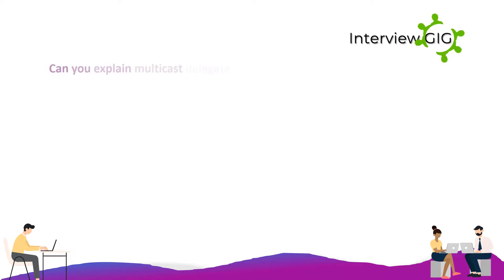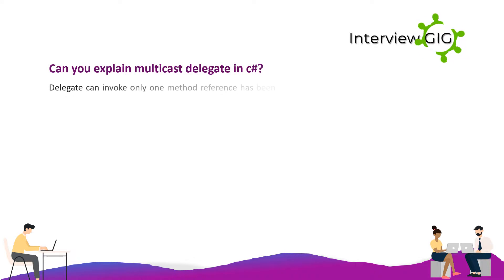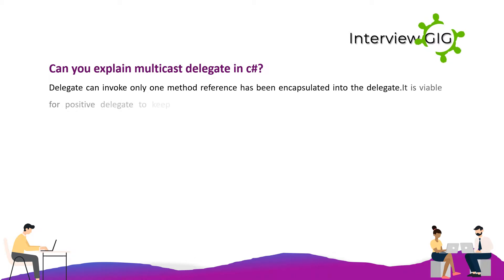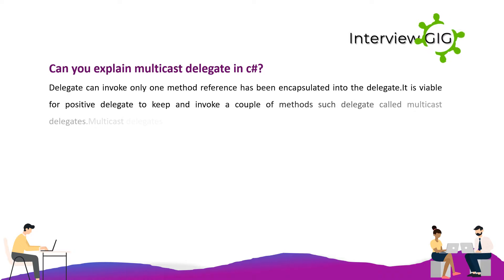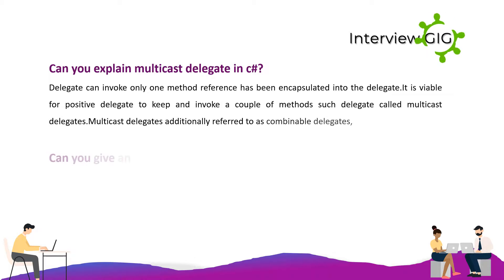What is a multicast delegate in C#? A delegate normally invokes only one method reference encapsulated within it. However, it is possible for certain delegates to hold and invoke multiple methods; such delegates are called multicast delegates, also referred to as combinable delegates.